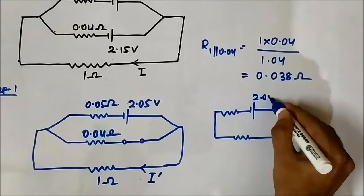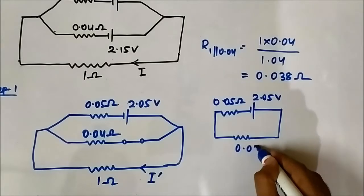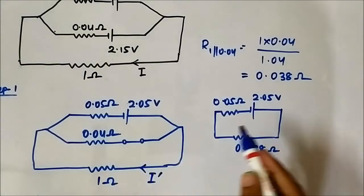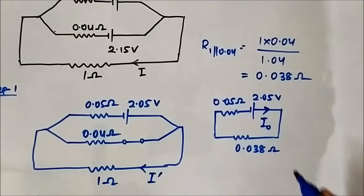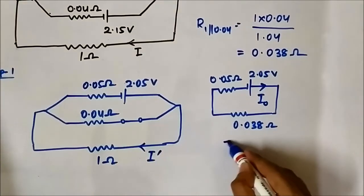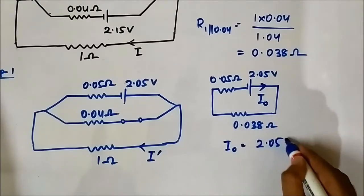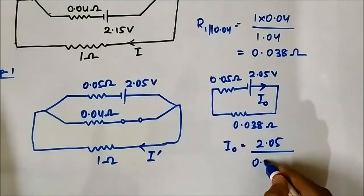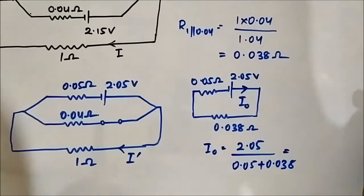We redraw the circuit with 2.05 volt, 0.05 ohm, and 0.038 ohm. The current i₀ starts from the positive terminal and returns to the negative terminal. So i₀ equals 2.05 divided by the total resistance of 0.05 plus 0.038.